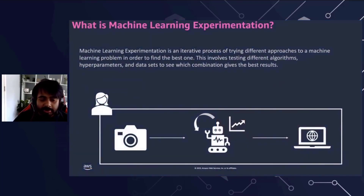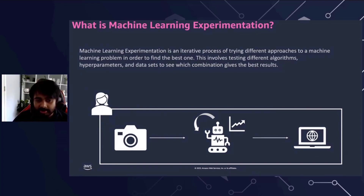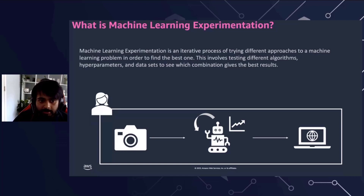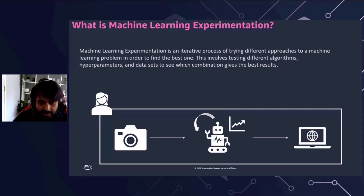Before we dive into SageMaker Experiments, let's take a few minutes to understand what machine learning experimentation is and why it's important. Machine learning experimentation is a process of trying different approaches to a machine learning problem in order to find the best one. This involves testing different algorithms, hyperparameters, and datasets to see which combination yields the best results. It is an iterative process that requires keeping track of each experiment and its results.